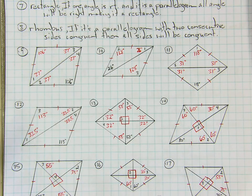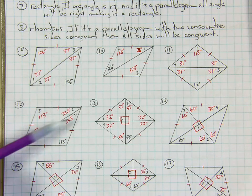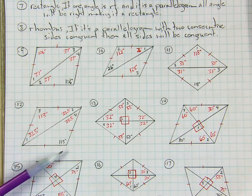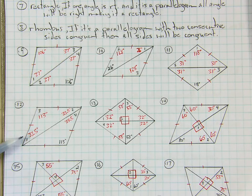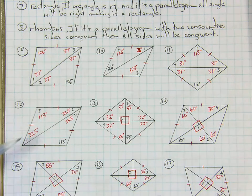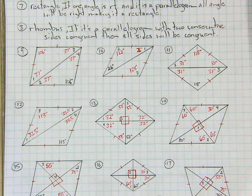Number 12 is the same setup — one diagonal drawn, giving two isosceles triangles. If that angle is 113, then angle 3 is 113. Subtracting 113 from 180 and dividing by 2 because those are the base angles, angles 1, 2, and 4 were all 33.5, and angle 3 was 113.